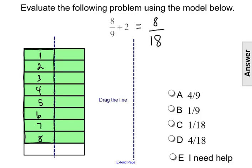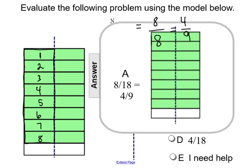So our quotient, 8/9 divided by 2, is 4/9. We'll see you next time.